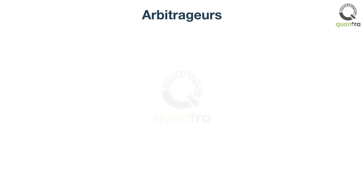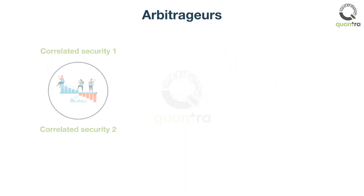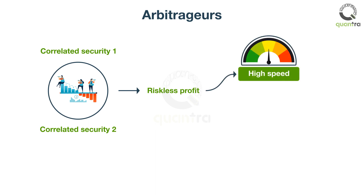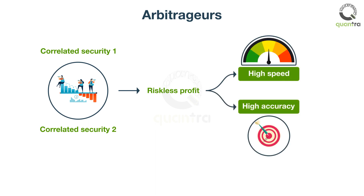Arbitrageurs usually trade securities whose prices are correlated, as they tend to rise or fall together. Arbitrage profits are, by definition, riskless, and that makes it a special type of trade. Spotting an arbitrage opportunity in the financial markets is difficult and requires high trading speed and accuracy in order to realize profits.